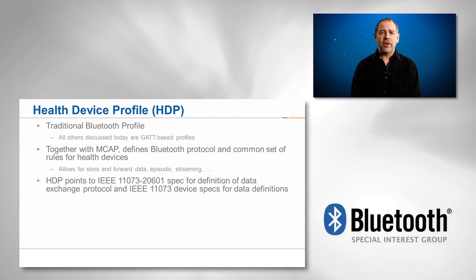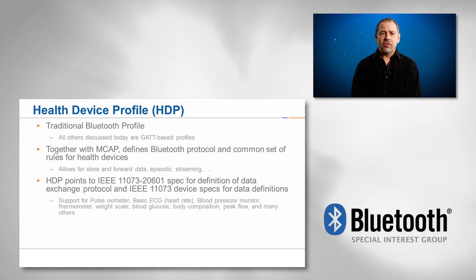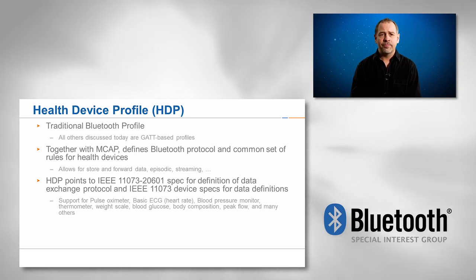HDP was designed to be very generic, and it relies on data specifications published by the IEEE 11073 committee that define a data exchange protocol and device-specific data specifications that cover a wide range of devices. This allows HDP specifications to support a very wide number of current and future health devices, with the difference between implementations only at the data layer.